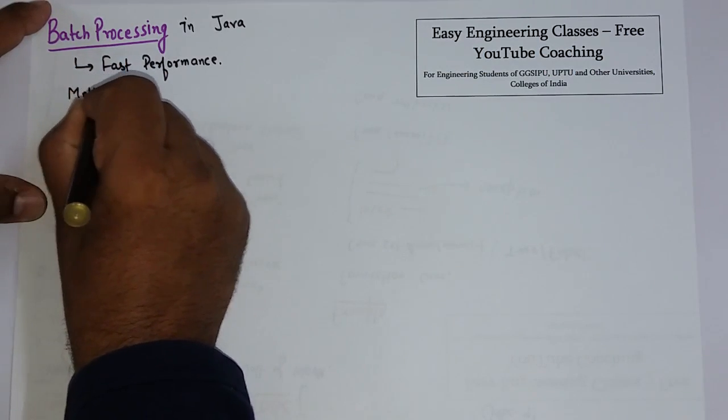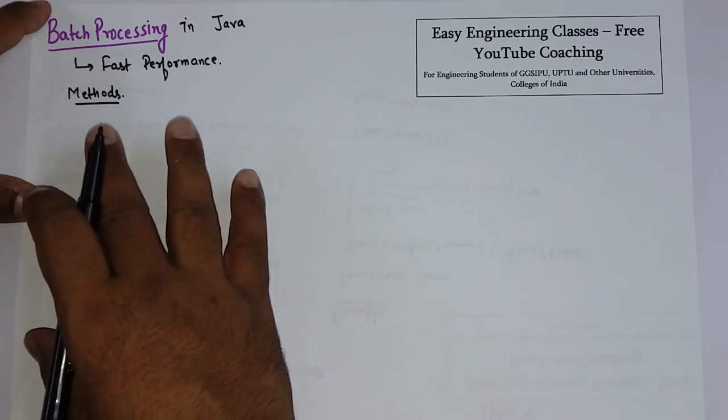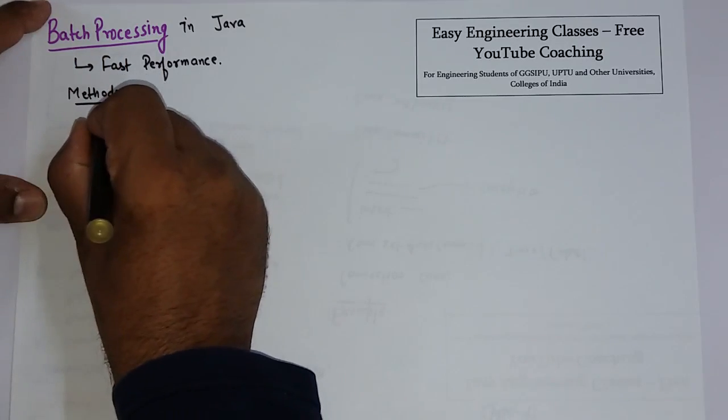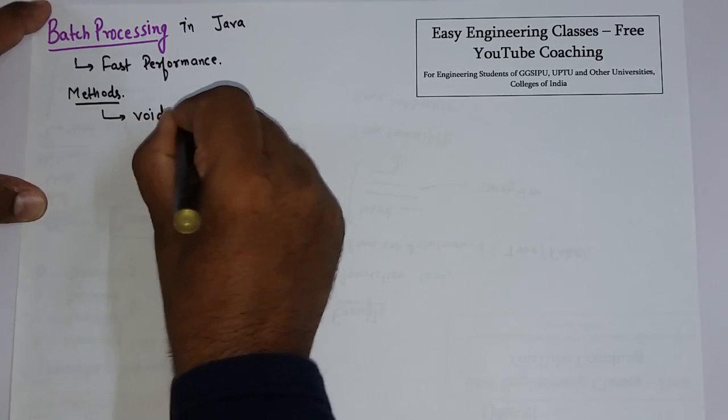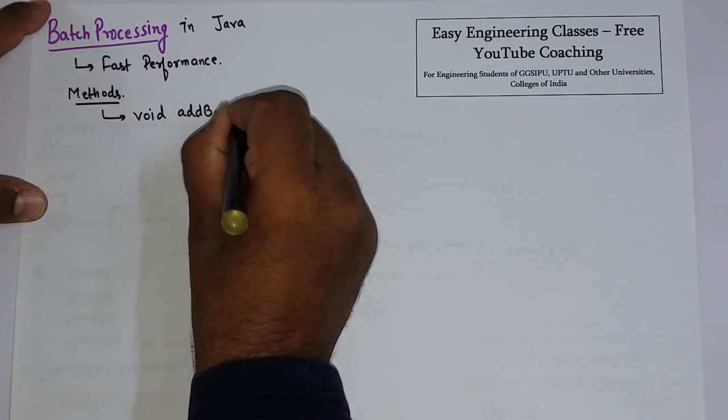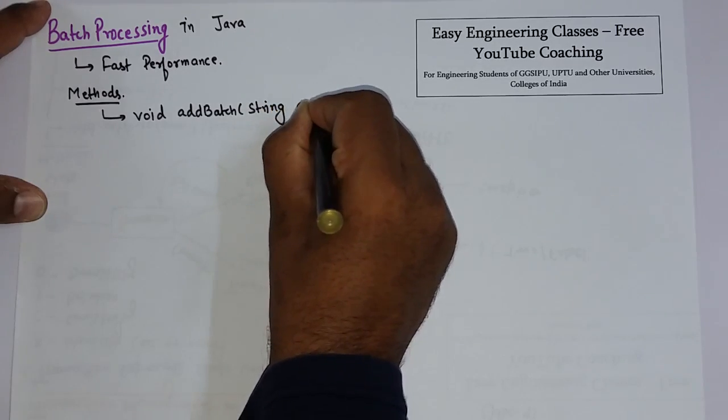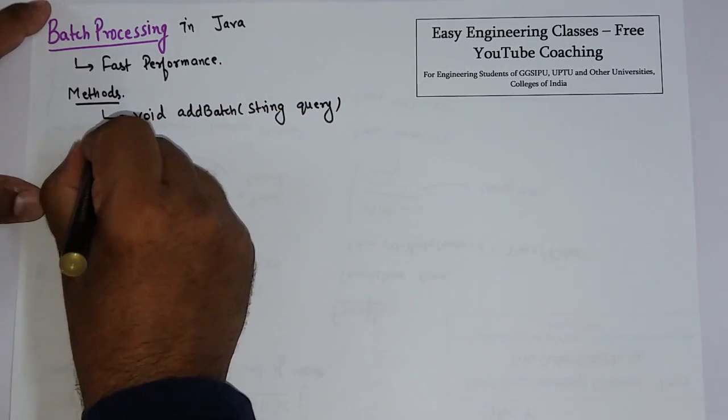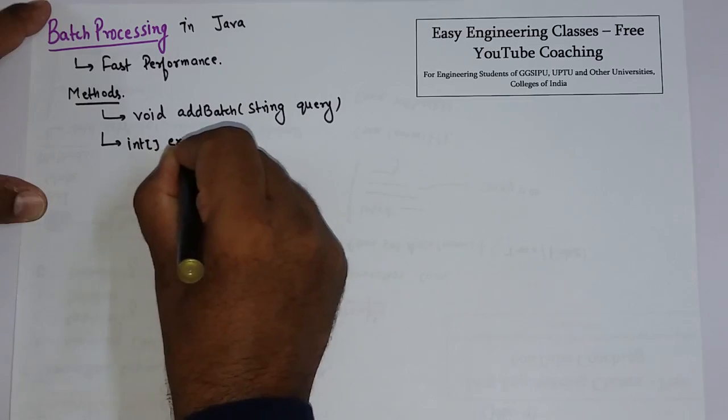There are basically two different methods of the Statement interface used for batch processing. First is void addBatch(String query). This method is used to add any query into a batch. And next is int executeBatch().